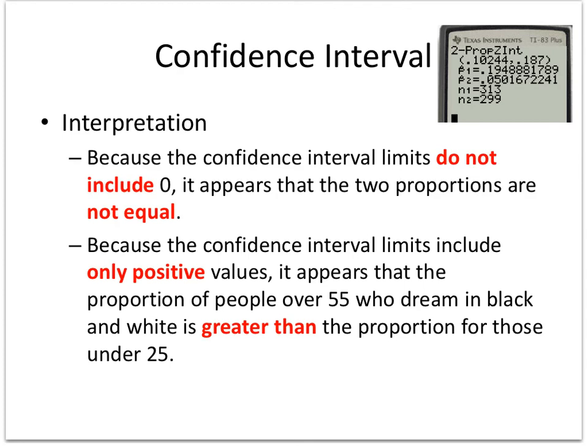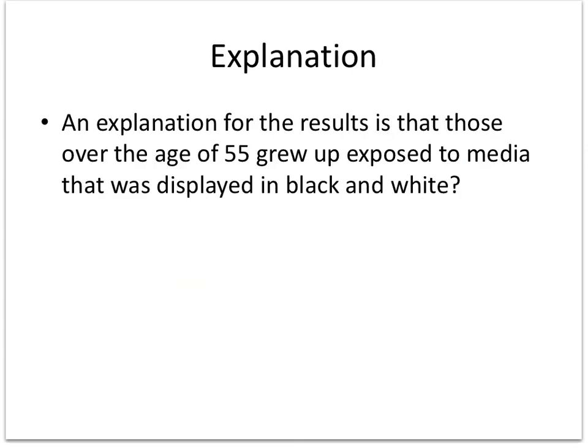Because the confidence interval does not include 0 — notice that 0 is not included here — the only way 0 would be included is if one bound was positive and the other was negative. Think about a number line. Because the confidence interval includes only positive values, it appears that the proportion of people over 55 who dream in black and white is greater than the proportion for those under 25.